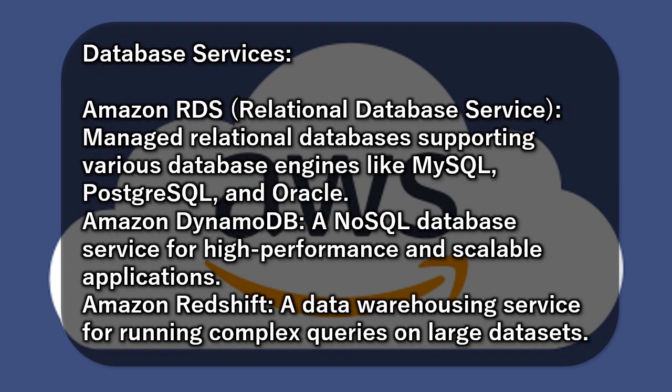Database Services: Amazon RDS (Relational Database Service) provides managed relational databases supporting various database engines like MySQL, PostgreSQL, and Oracle. Amazon DynamoDB is a NoSQL database service for high-performance and scalable applications. Amazon Redshift is a data warehousing service for running complex queries on large datasets.